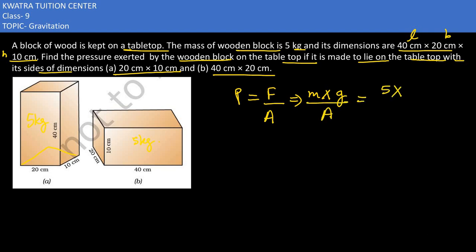M in this case is 5. G is 9.8 and what is the area in this case? It would be length into breadth. And in the first case, what is the area in which we have pressure? 20 and 10. So 20 multiplied by 10 would be there. Now here is a centimeter.